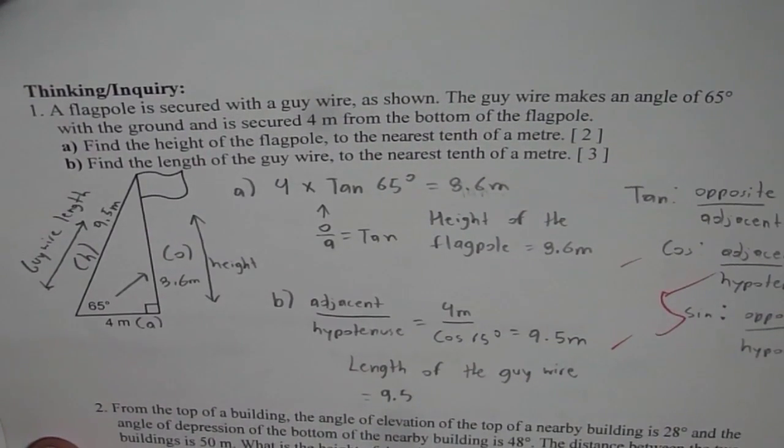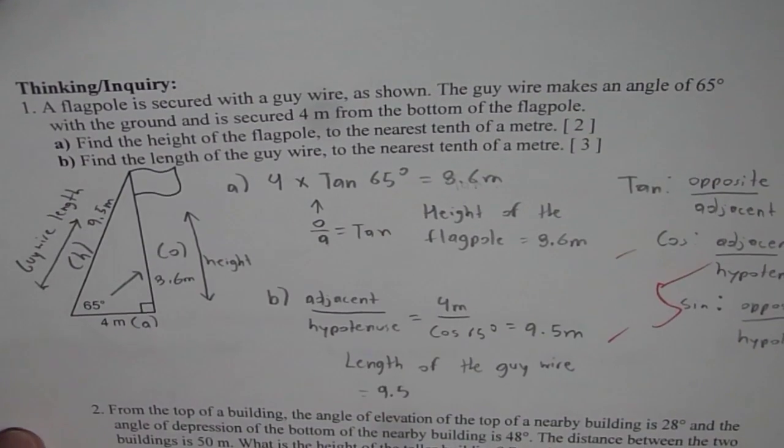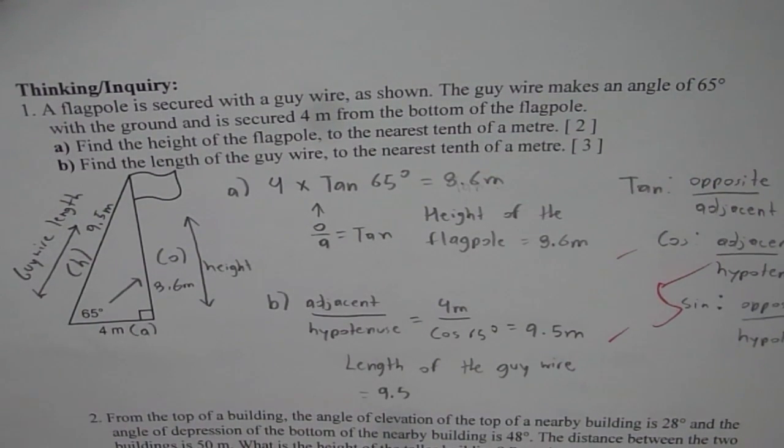Thinking and inquiry questions. So here is a very popular question on flag pole. The question is a flag pole is secured with a guy wire as shown. The guy wire makes an angle of 65 degrees with the ground and is secured 4 meters from the bottom of the flag.